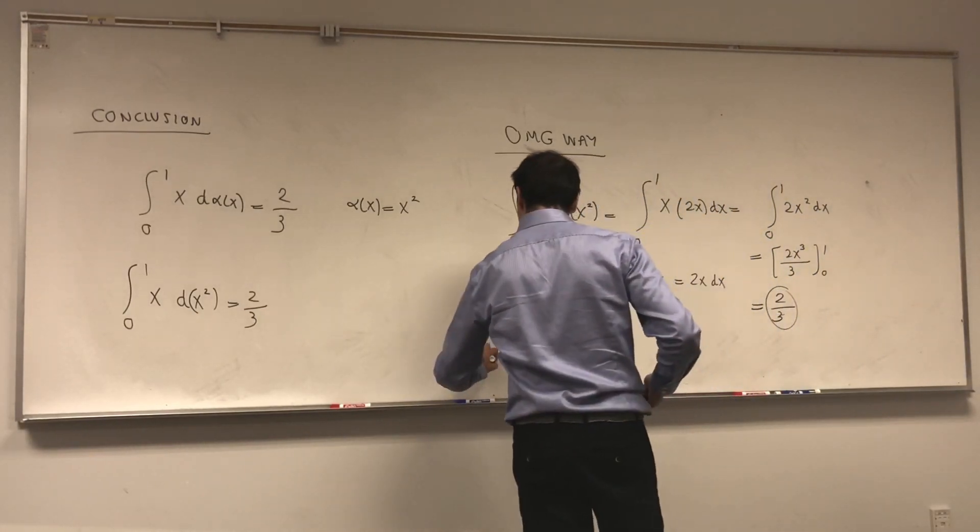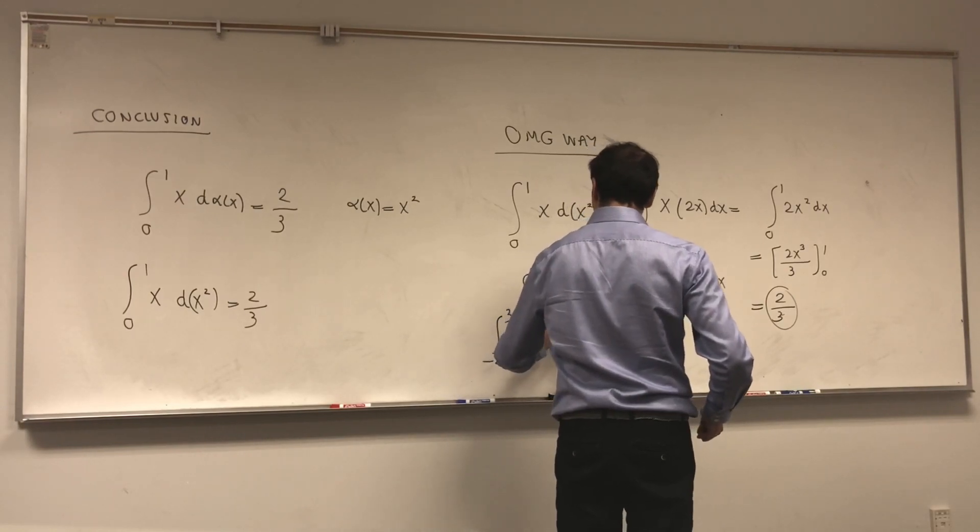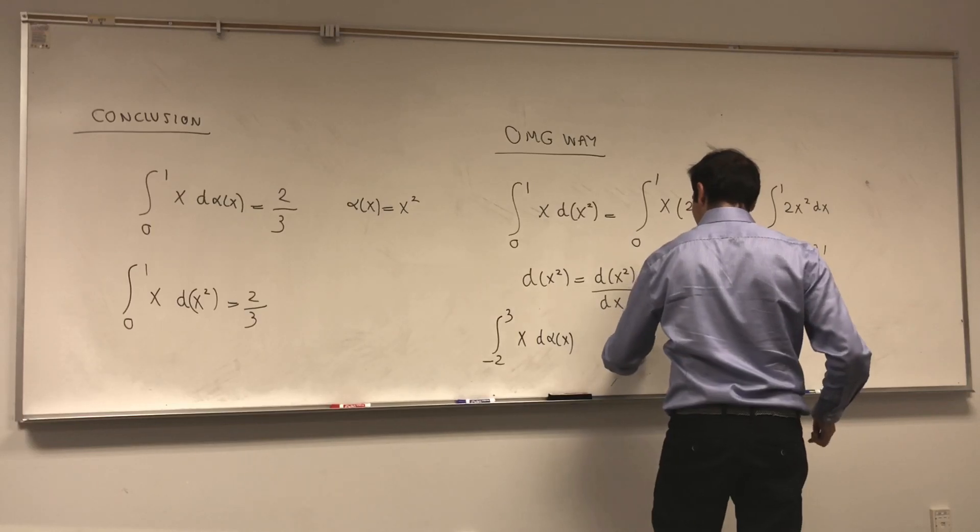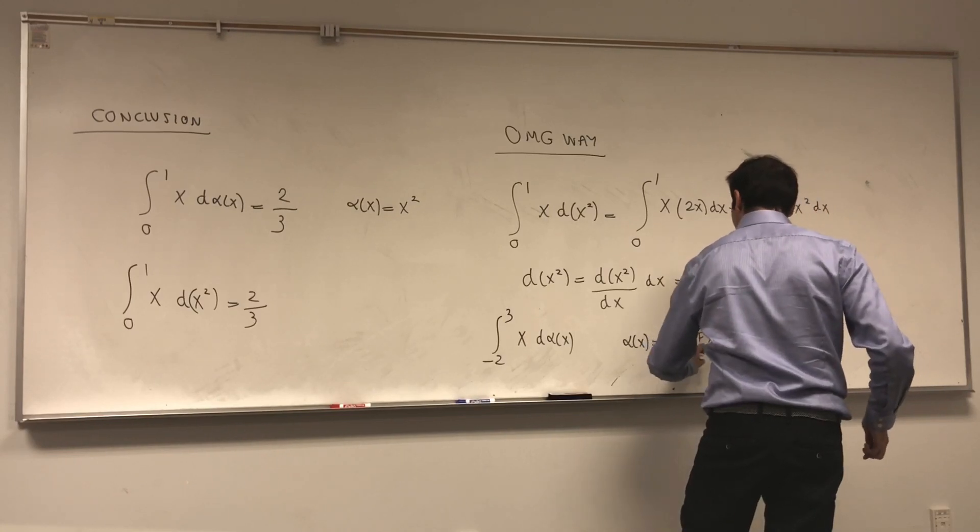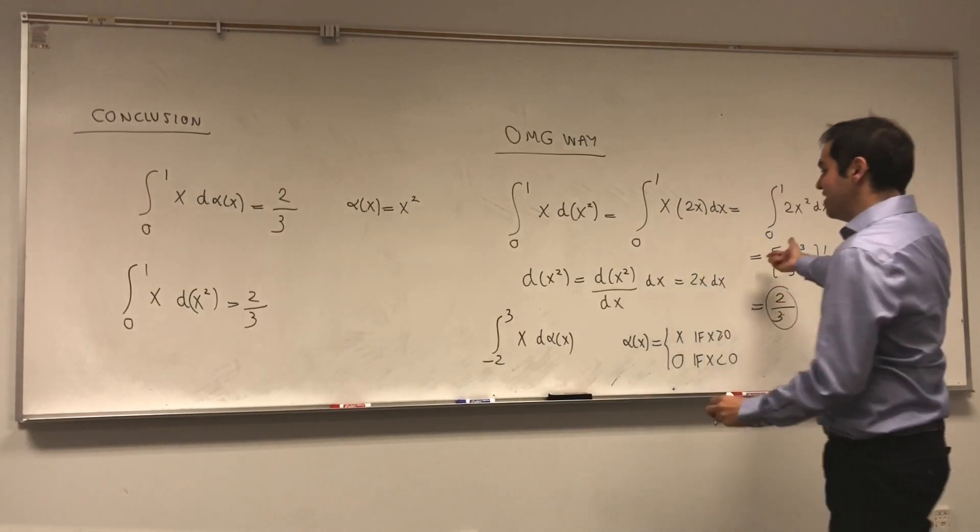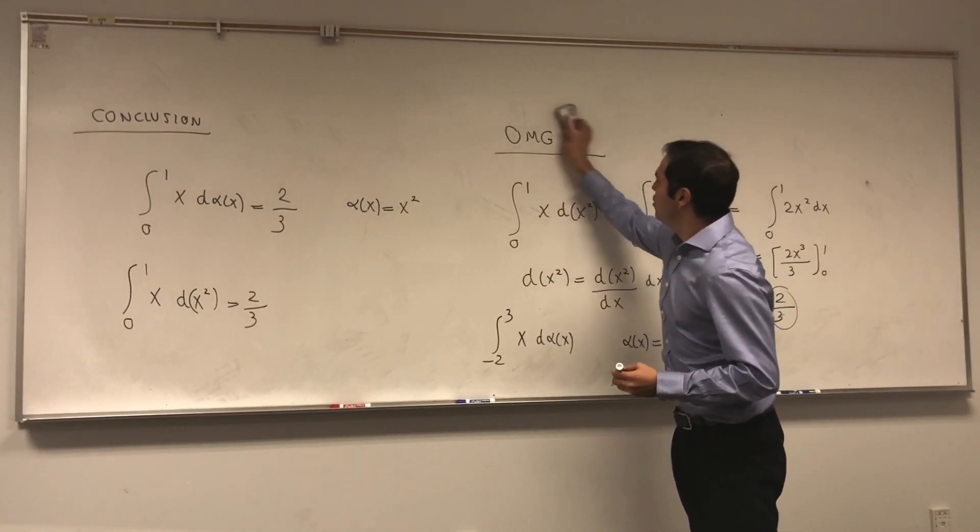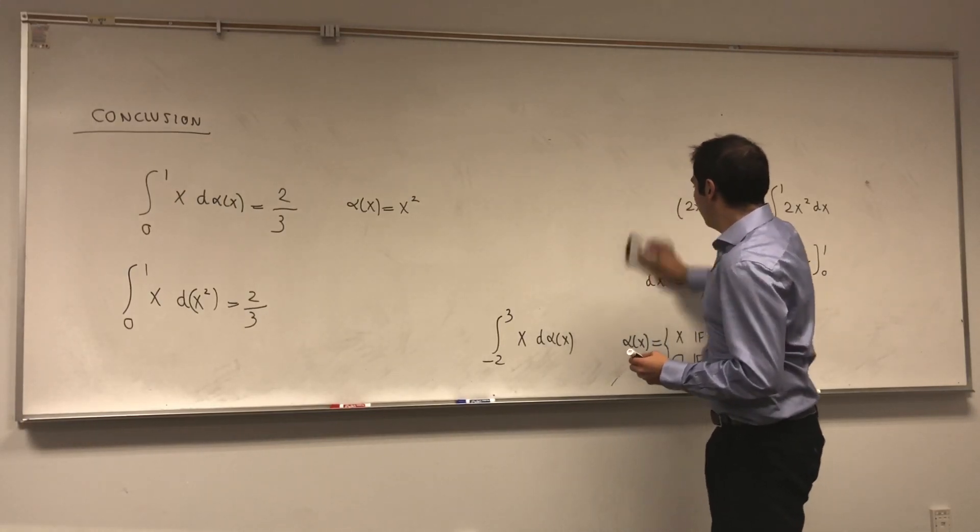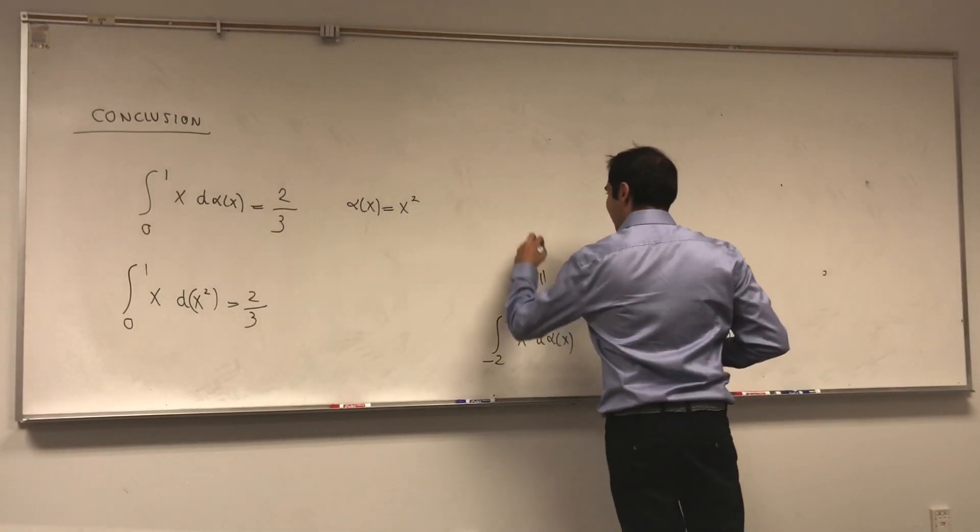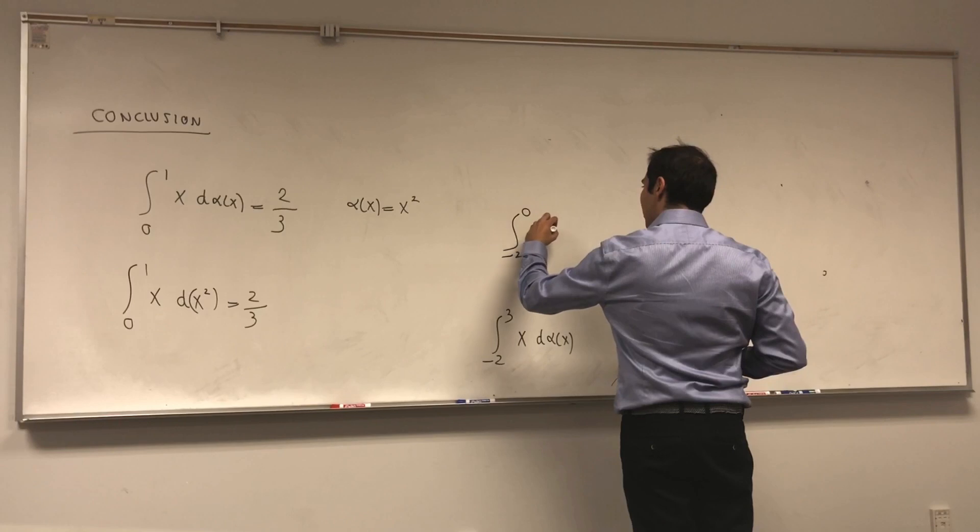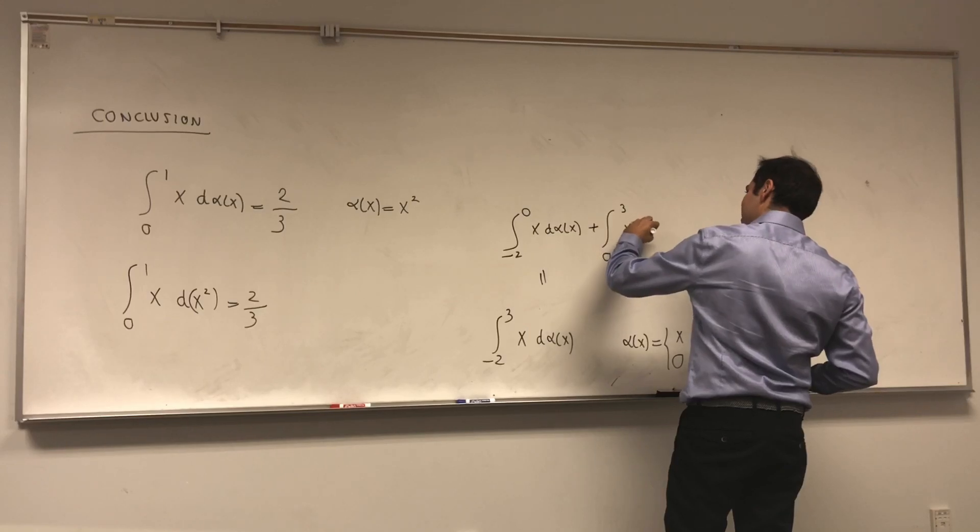And here's maybe another example, like integral, I guess, you can also have discontinuous functions. So if you have integral x d alpha x, where alpha of x, that's x if x is positive, and 0 if x is negative. Strictly speaking, you cannot use this differentiation formula, but if you use the other formula that's given to you, I guess not even that, if you use, if you just decompose it from -2 to 0 of x d alpha x plus integral from 0 to 3 of x d alpha x,